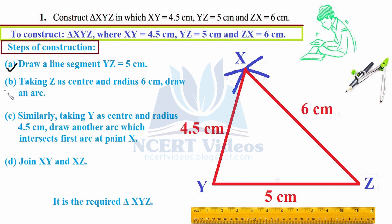Step C: Taking Y as center, adjust your compasses to a length of 4.5 cm. Put the needle at Y and draw an arc such that it intersects the previously drawn arc. Name that intersection point as X.